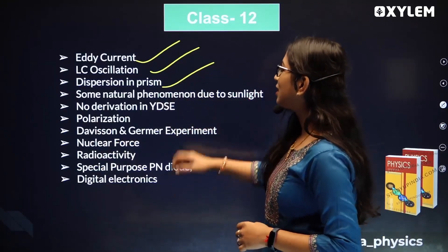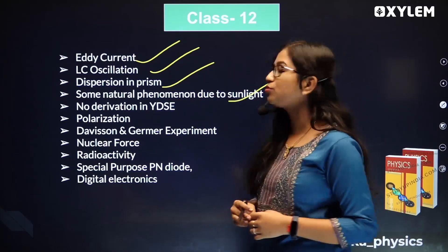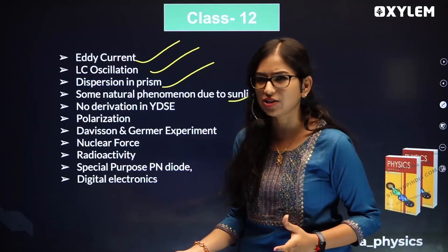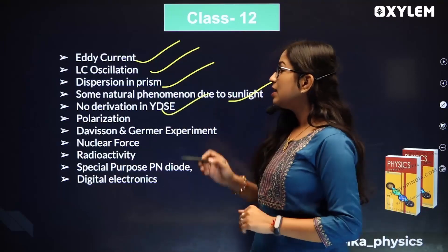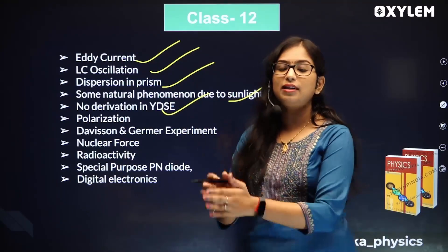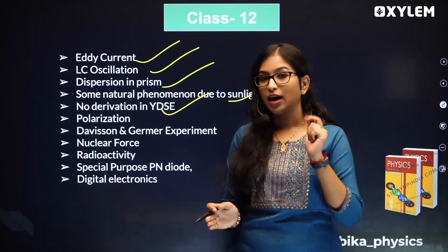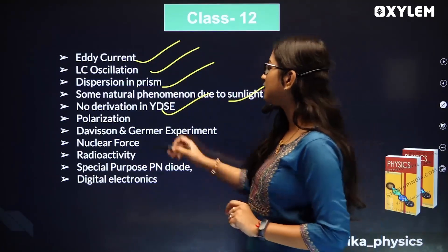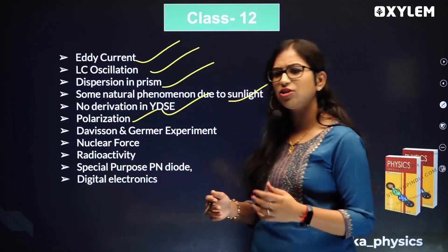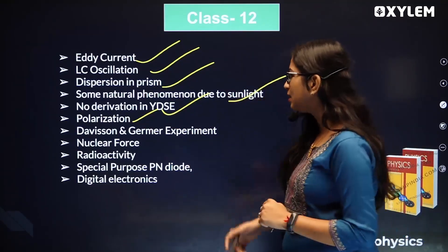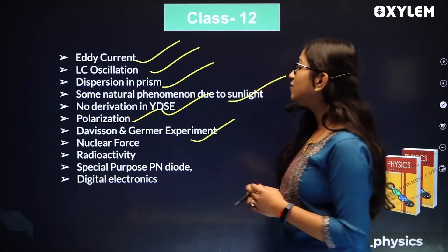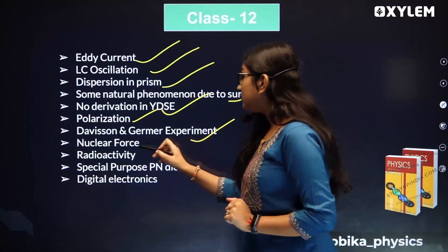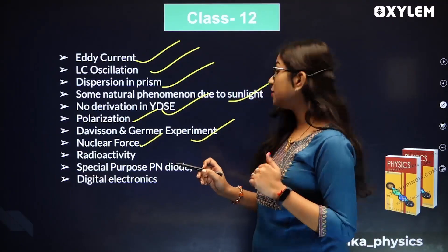Natural phenomena due to sunlight - scattering - is deleted. Young's double slit experiment is literally important; it has both concepts and derivation parts. Polarization is also deleted - it's not a super topic. Davisson and Germer experiment is a small topic that is also deleted.